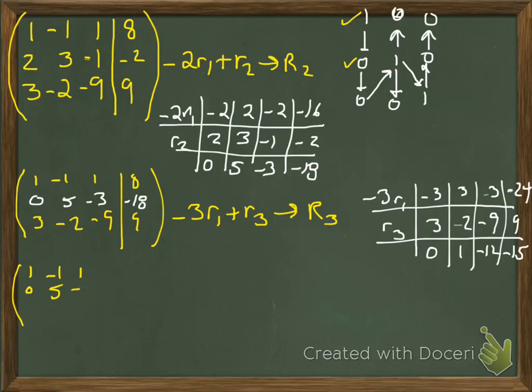Okay, so the top 2 rows are unaffected this time, and it's the bottom row that has now changed. The bottom row becomes 0, 1, negative 12, negative 15. Okay, and we are a third of the way there. Good for us.